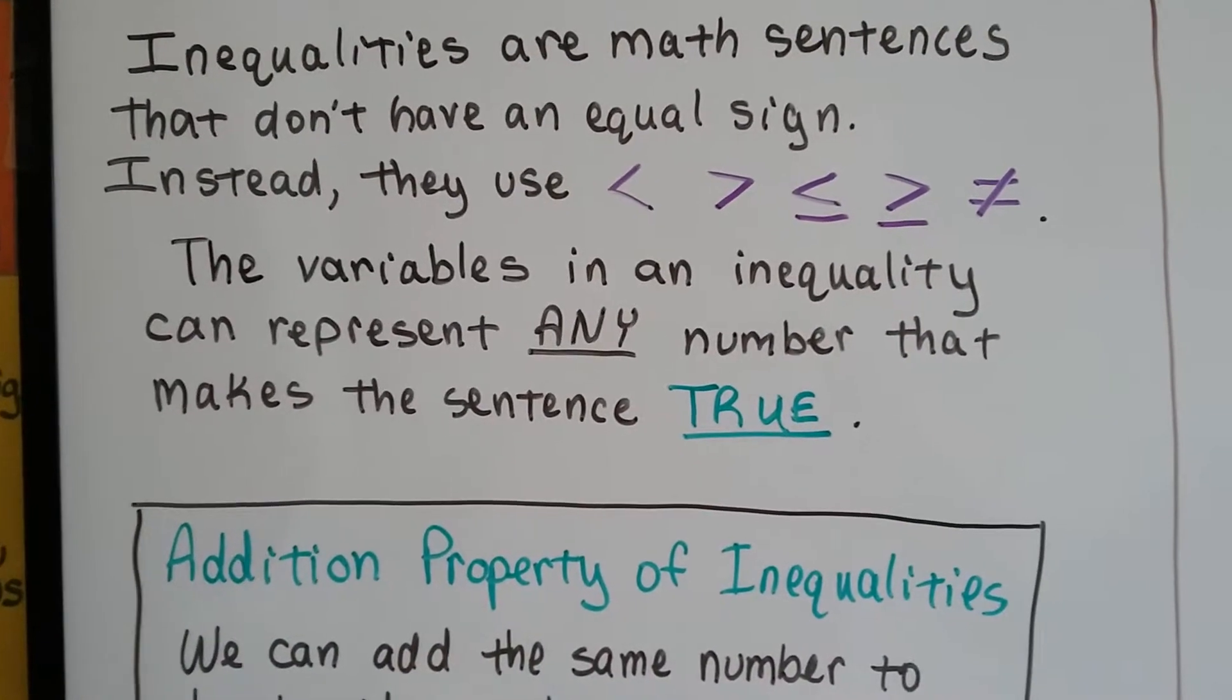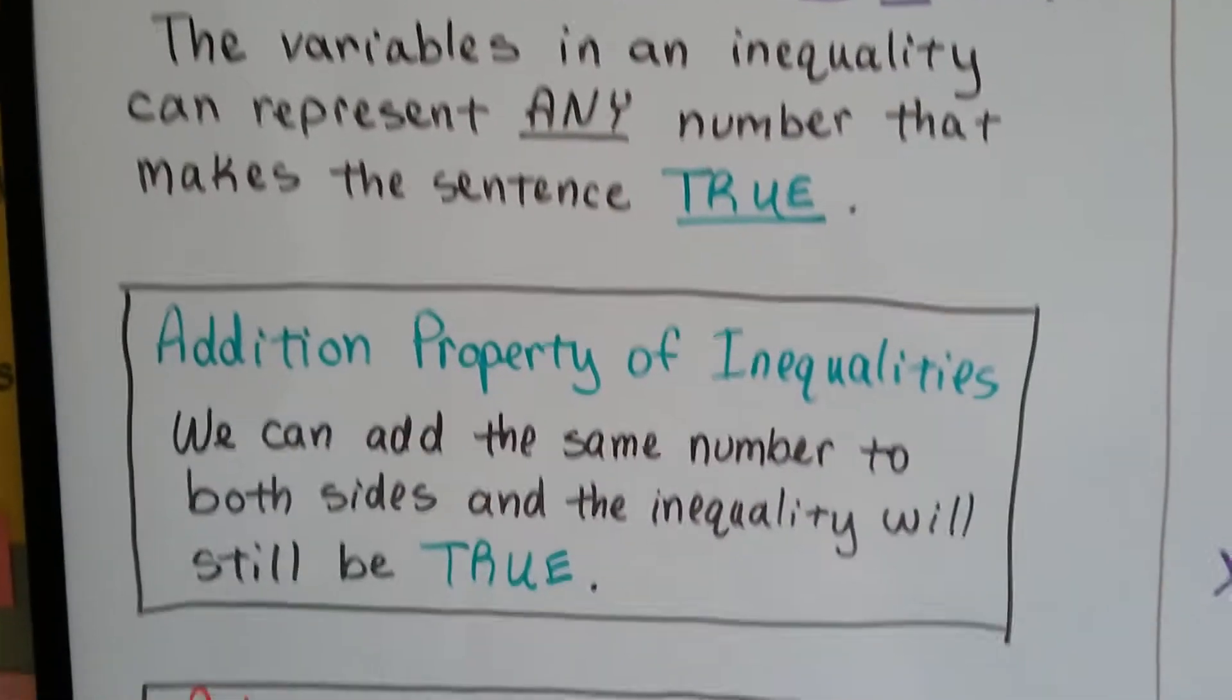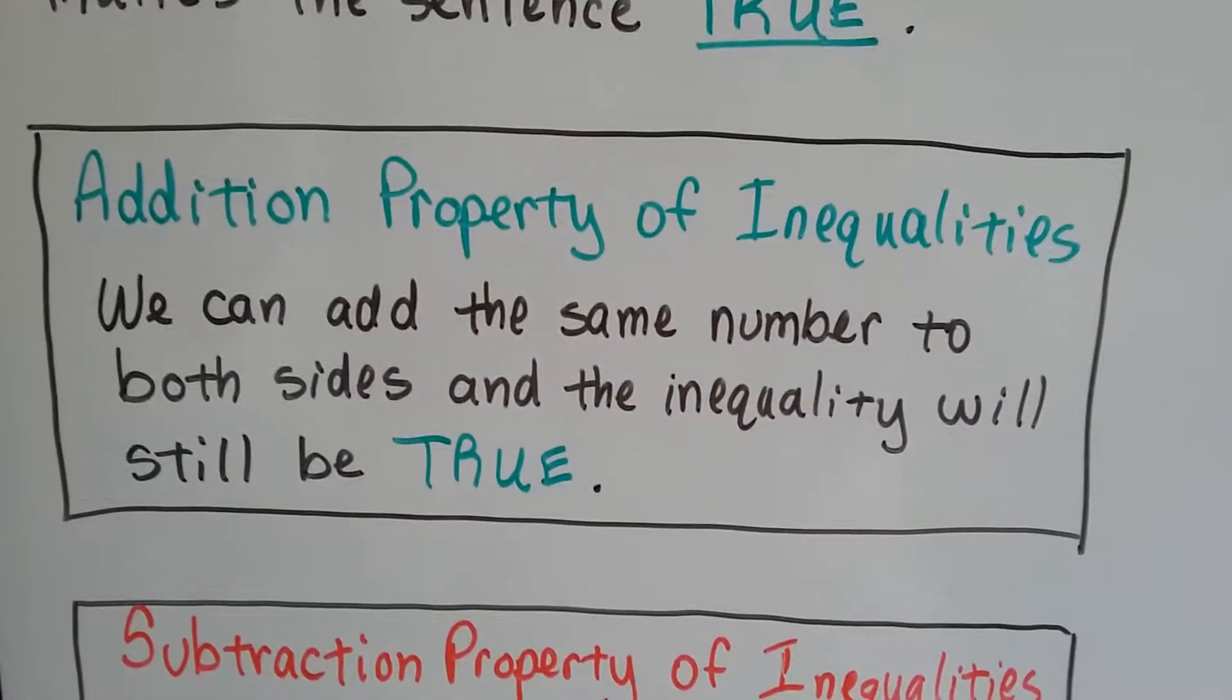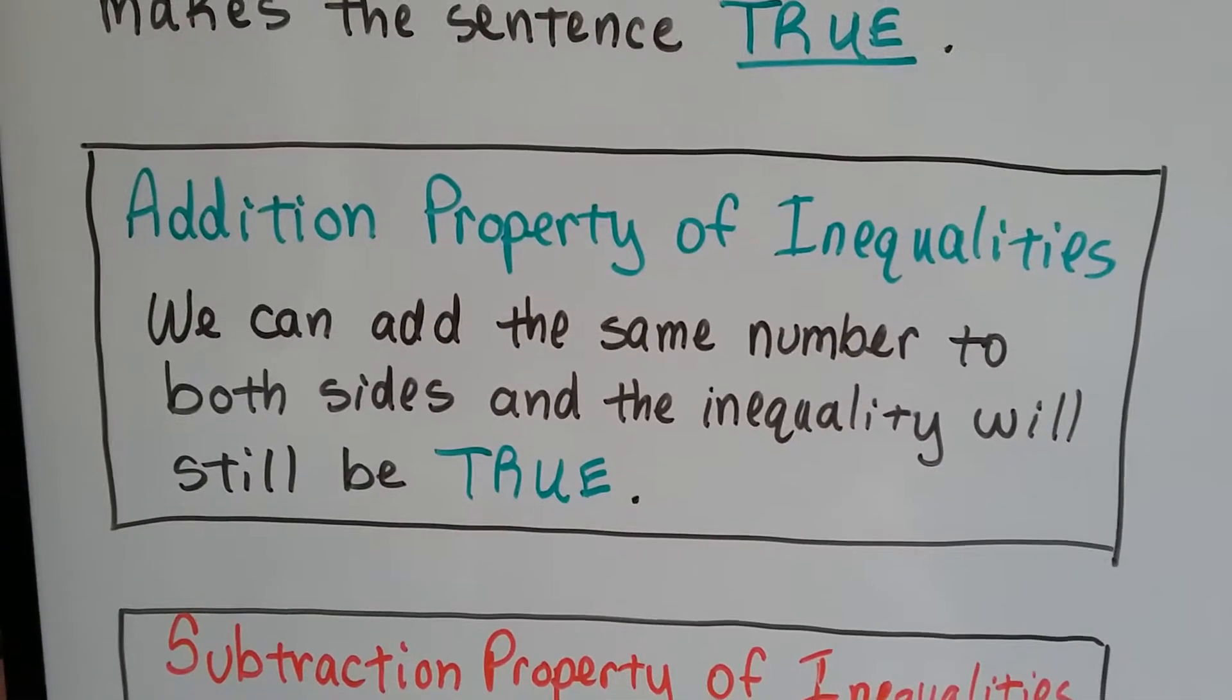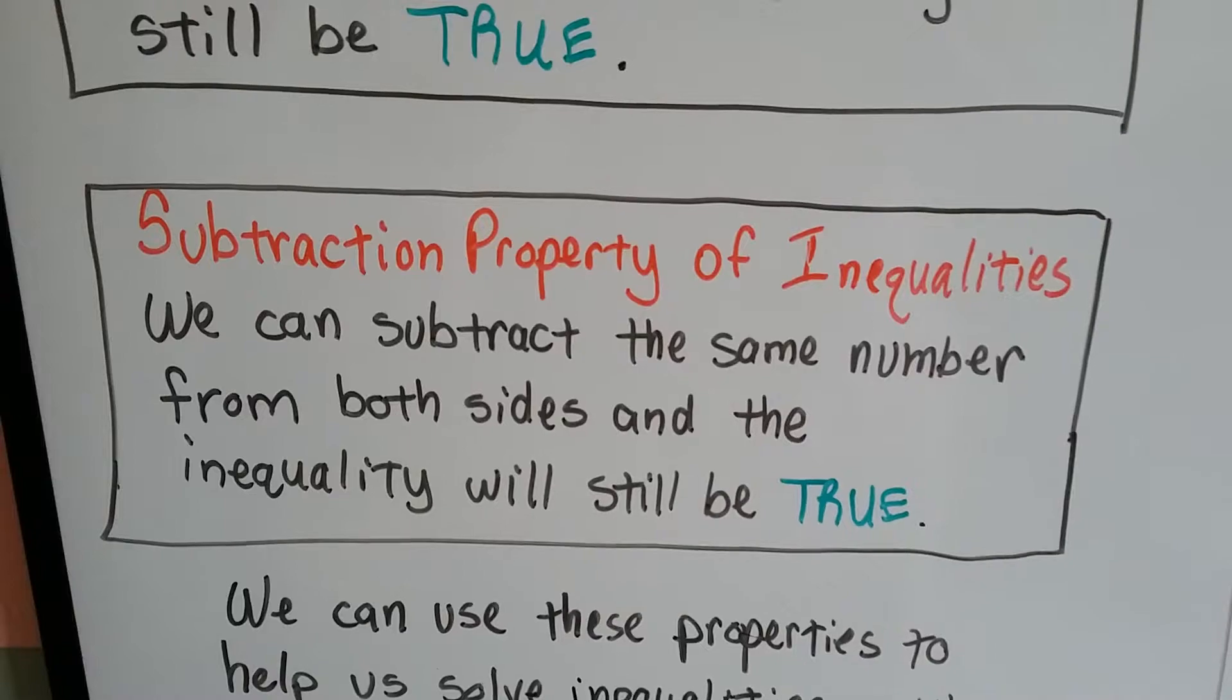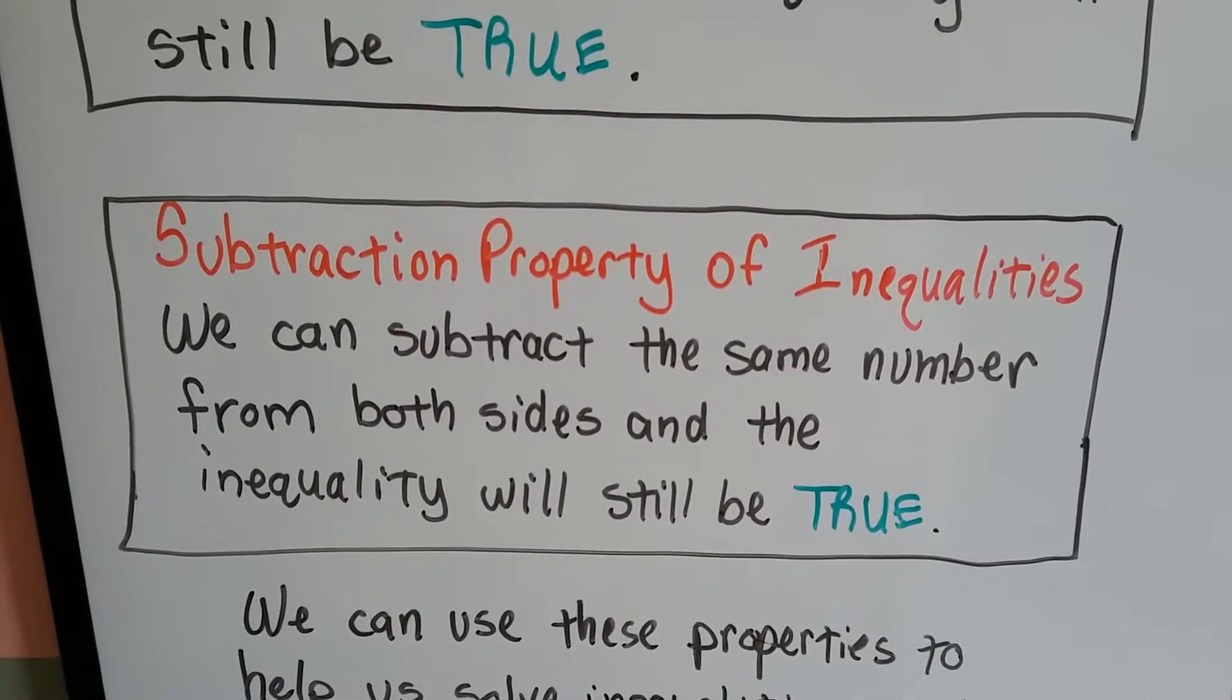The variables in an inequality can represent any number that makes the sentence true. The addition property of inequality says we can add the same number to both sides and the inequality will still be true. And the subtraction property of inequality says we can subtract the same number from both sides and the inequality will still be true.